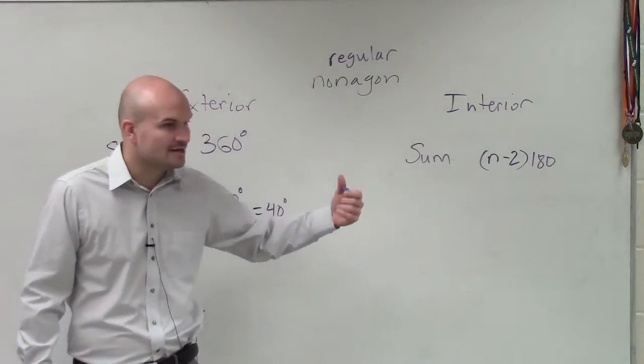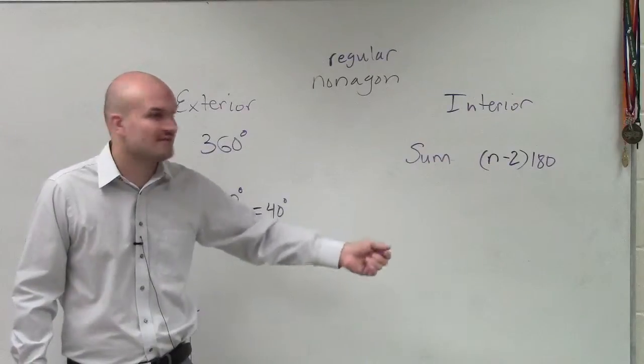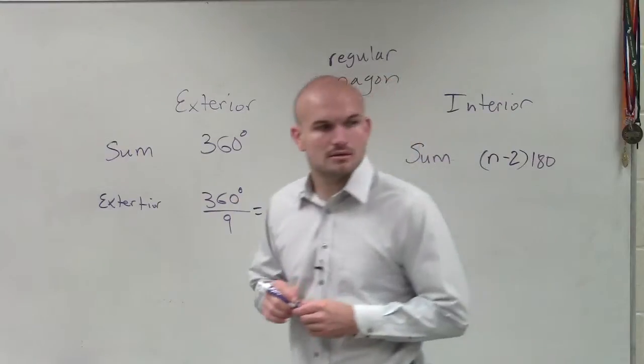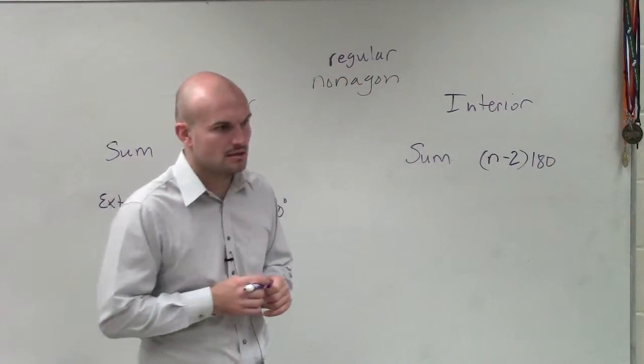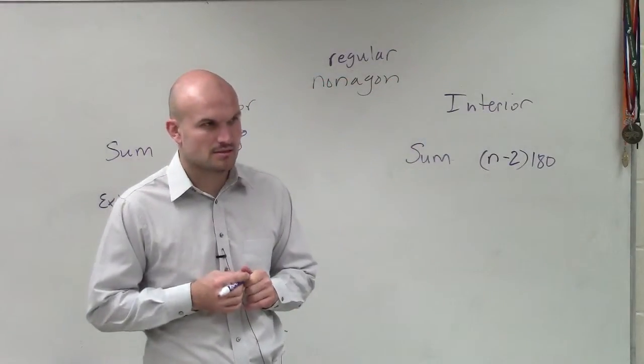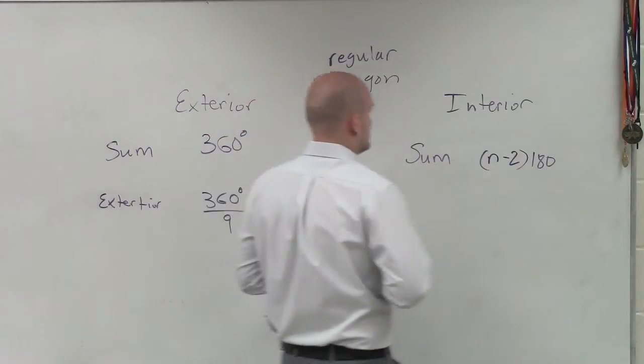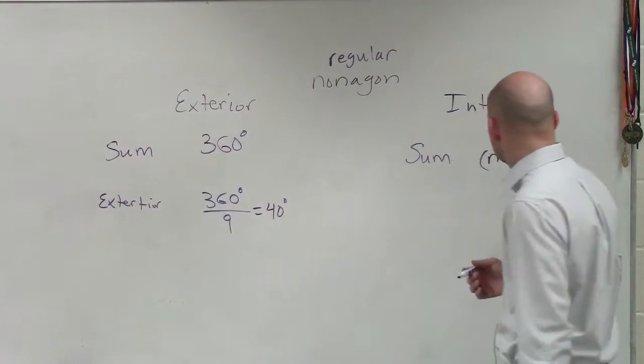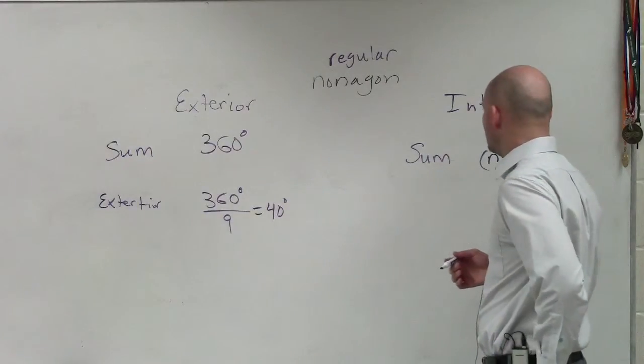Remember this formula where n is the number of sides. So since we have nine, we're going to do nine minus two, which is seven. Seven times 180. 1,000 what? 1,000 what? 260. Carry the one. 700. It's 360.